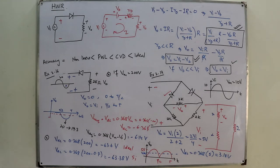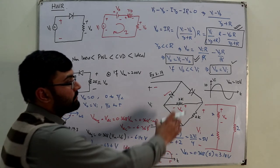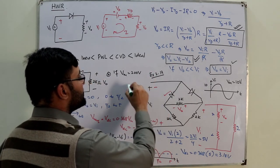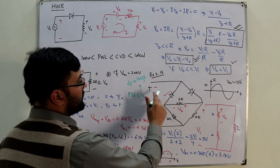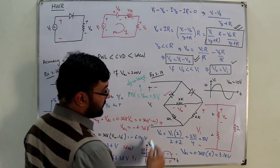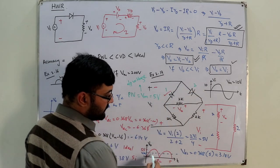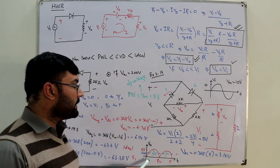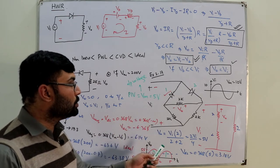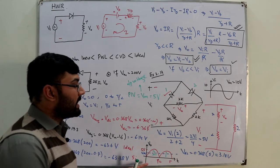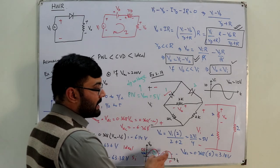The PIV rating is the maximum reverse voltage a diode must withstand. For a bridge circuit, PIV equals V_m of the output voltage, which here is 5 volts. Diode 1 is off during the positive half cycle with PIV of 5 volts, and diode 2 is off during the negative half cycle also with PIV of 5 volts.